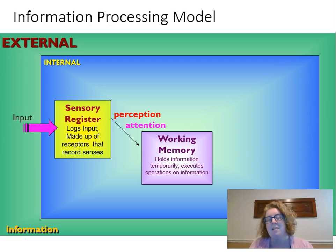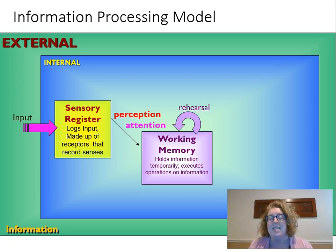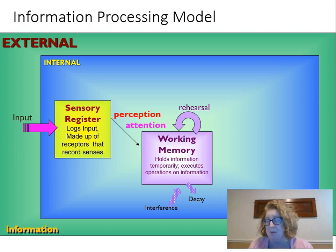The things we're attending to go to our working memory. Our working memory is pretty small — it can only hold a certain amount of information for a limited amount of time. Right now your working memory is holding my voice and the information I'm talking about. To keep something in working memory we have to rehearse it, like saying digits of a phone number over and over again. After a while it will decay if we don't rehearse it, and we can also have interference — someone saying other random numbers causes us to forget what we were trying to remember.